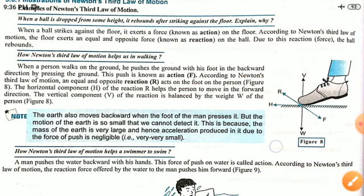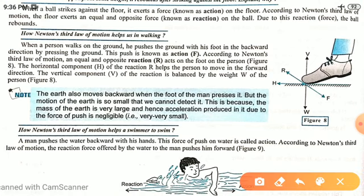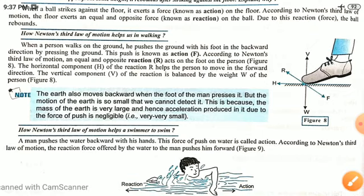One more daily life situation: how is swimming possible? When you are swimming in water, you push the water in the backward direction — this push acts as the action force. The water then applies a reaction force in the forward direction, and it is due to this reaction force that swimming is possible.